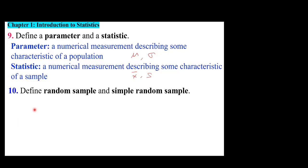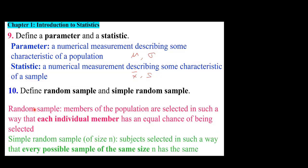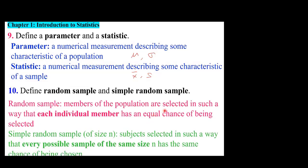Define a random sample and a simple random sample. In a random sample, members of the population are selected such that each individual member has an equal chance of being selected. In a simple random sample (SRS), subjects are selected such that every possible sample of the same size n has the same chance of being chosen. For example, with 30 students every student has a 1-in-30 chance; for SRS, you first choose a sample size — say 5 — and every possible group of 5 must have an equal chance.